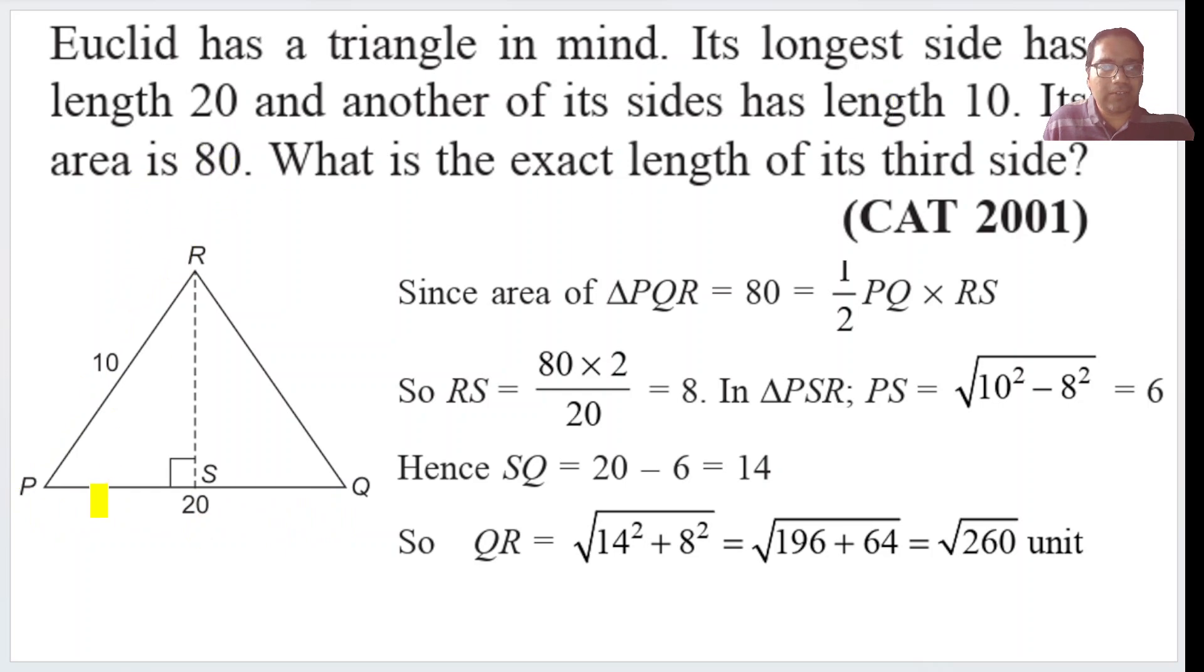Now what is the area of a triangle? Half into base into height. Let's take the third point as R and draw a perpendicular on PQ. RS is perpendicular to PQ. Half into base into this RS is 80. Half into 20 into RS is 80. So what is RS? RS is 8.